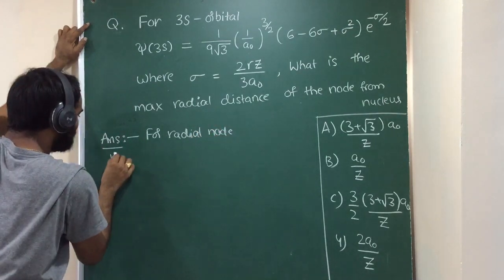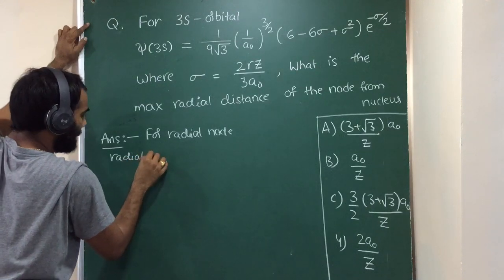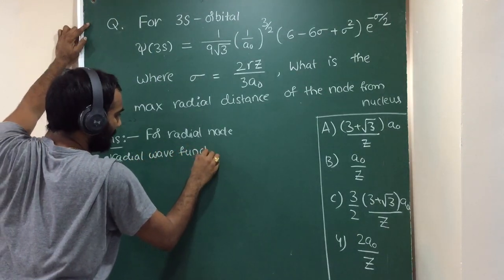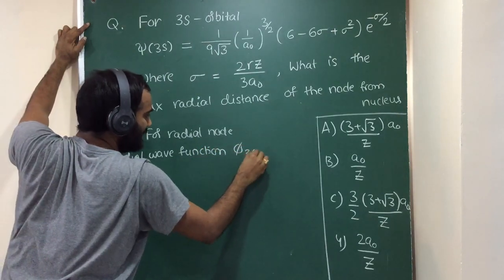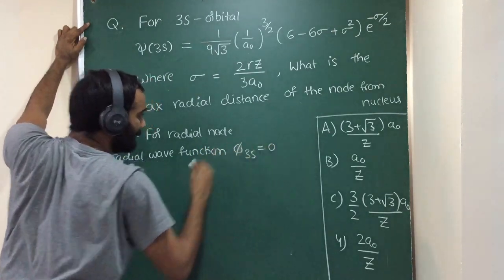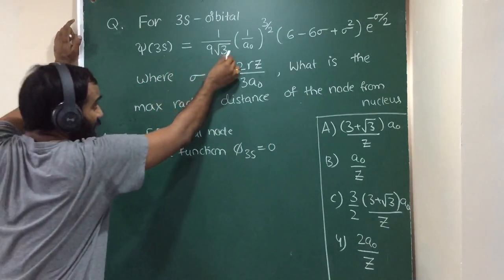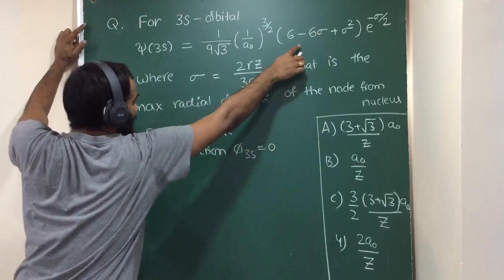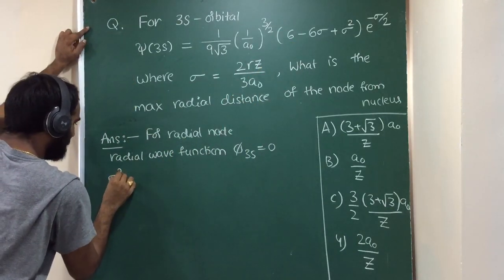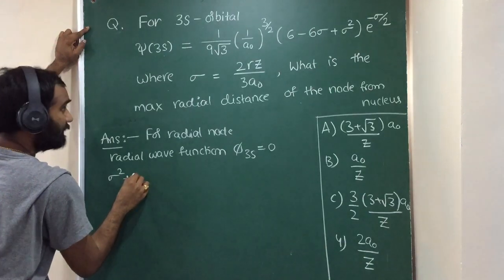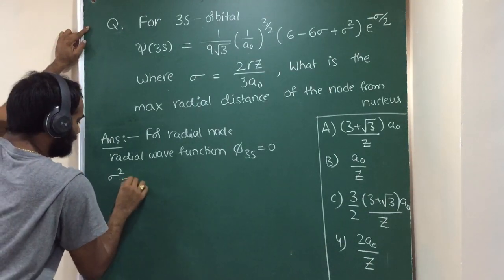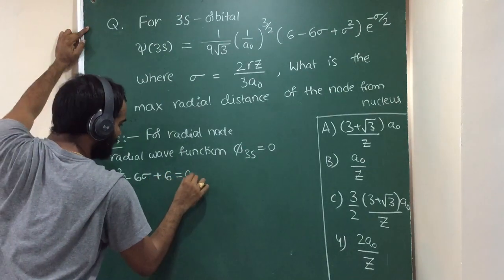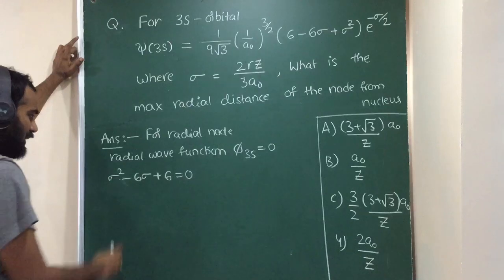From the above expression for the radial node, the radial wave function psi 3s equals zero. That means the above expression equals zero, then we can get sigma square minus 6 sigma plus 6 equals zero. Here it is one of the algebraic equations.